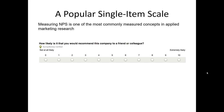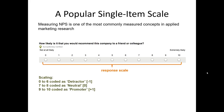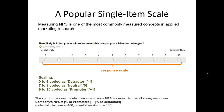A traditional Net Promoter Score Scale question should have 11 points, 0 to 10, with the anchors being not at all likely to extremely likely. After respondents complete the question, those codes are then recoded for the actual scoring purposes. If a respondent scores from 0 to 6, they're recoded as a detractor — imagine this as a negative 1. If they respond with a 7 or 8, they're coded as a passive — a score of 0. And if they score a 9 or 10, they're called a promoter — a positive 1.